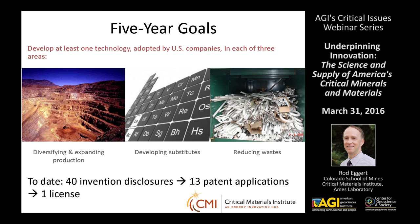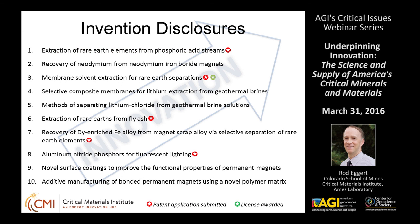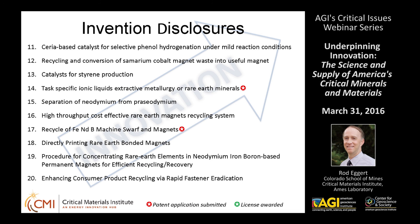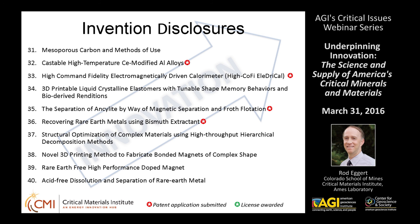I have a couple of slides listing our invention disclosures that I won't go through in detail. All three areas of research — process engineering for primary production, process engineering for recycling and reuse, and material science and engineering for developing substitutes — are represented in our invention disclosures, totaling 40 disclosures across four sets of ten. These are the starting point for licensing and commercializing technologies.